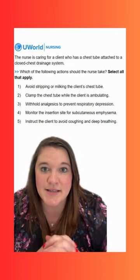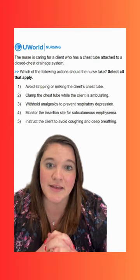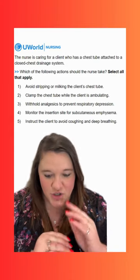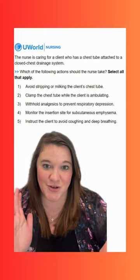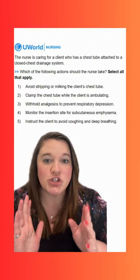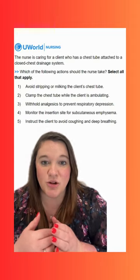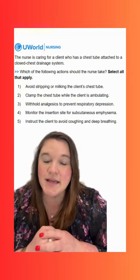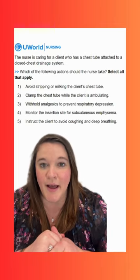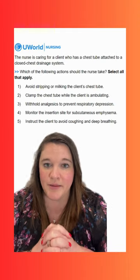Option two says to clamp the chest tube while the client is ambulating. This is not a correct option — we don't want to clamp the chest tube. When we clamp the chest tube, we are preventing drainage from anything that's in that pleural cavity that needs to come out. We've stopped it, so we are going to have an increase in that intrathoracic pressure. We can develop a tension pneumothorax when that happens, which is very dangerous. So we definitely want to avoid clamping unless we have a specific order or we are troubleshooting. We definitely don't want to clamp while we're ambulating.